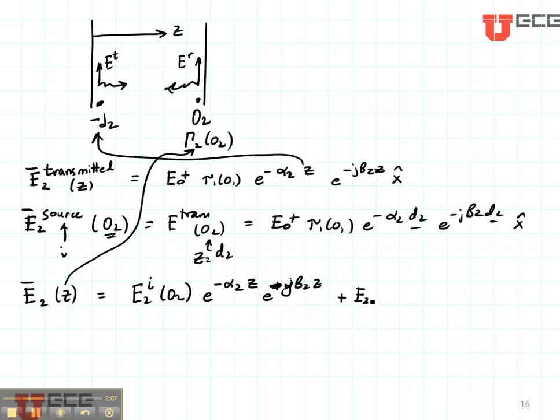So it's going to be E2 incident at O2 times the reflection coefficient at O2. Then it's going to be propagating in the minus Z direction, so it will be multiplied by E to the alpha 2 Z, E to the J beta 2 Z. All of this is polarized in the X direction.